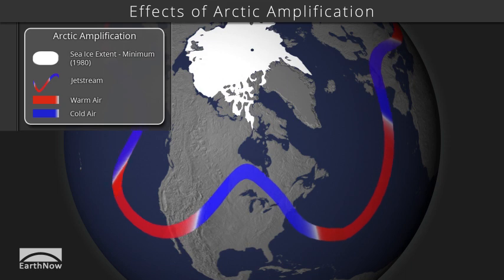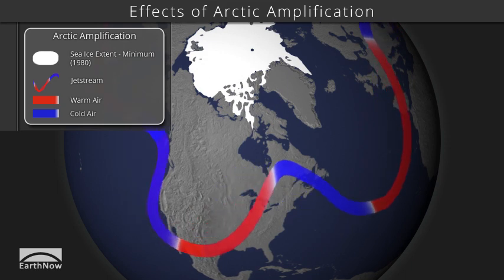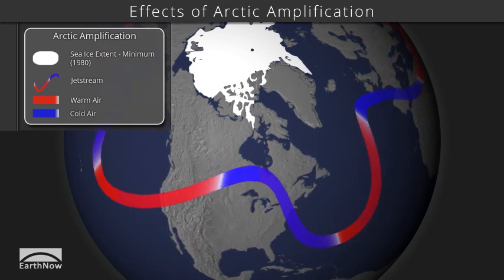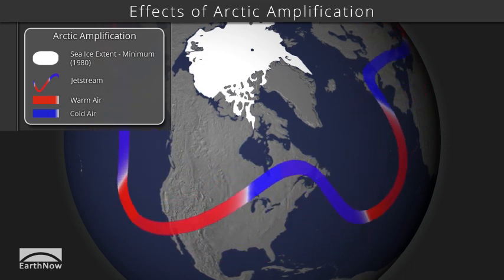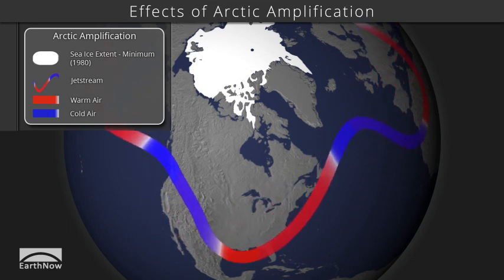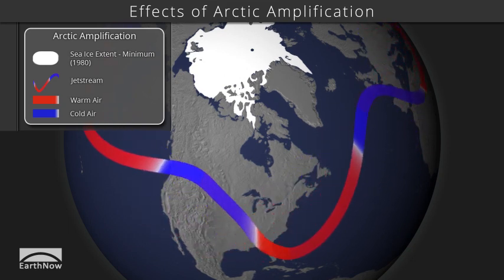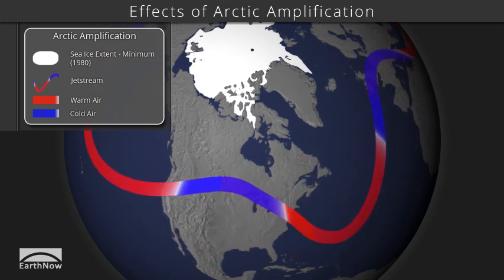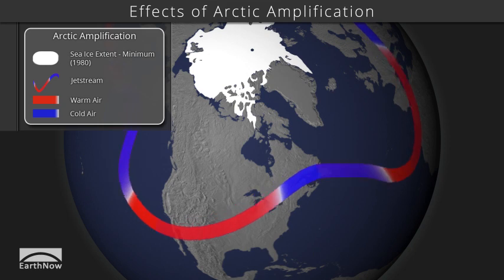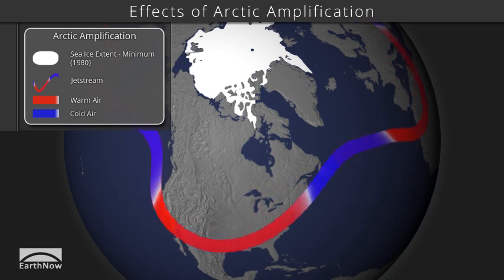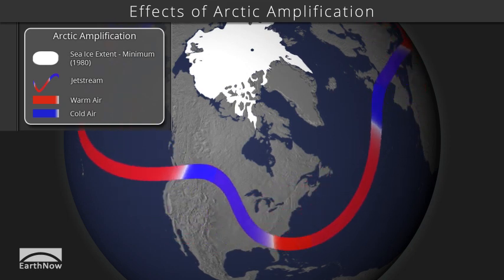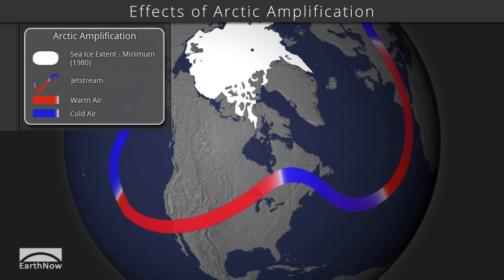Approaching North America, the jet stream moves northward over the Rocky Mountains, then dips southward, forming a trough towards the east coast, then northward as a ridge over the Atlantic Ocean. It continues in a similar long wave pattern over Europe, Asia, and the Pacific.